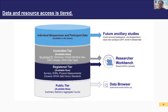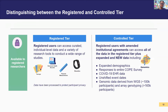We also have a controlled tier, which features our genomic data and more granular data than the registered tier, such as the first three digits of a participant's zip code and unshifted event dates. Longer term, we will also have biospecimens and plan to add ancillary studies. Generally speaking, the controlled tier includes all data types available in the registered tier but at a more granular scale, plus genomic data not available in the registered tier.